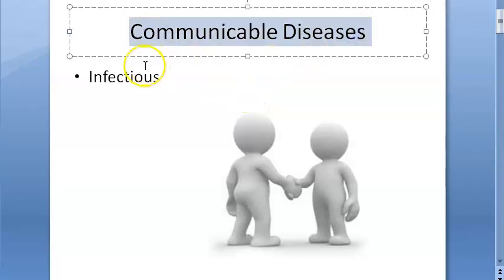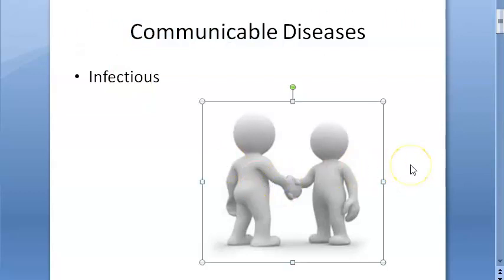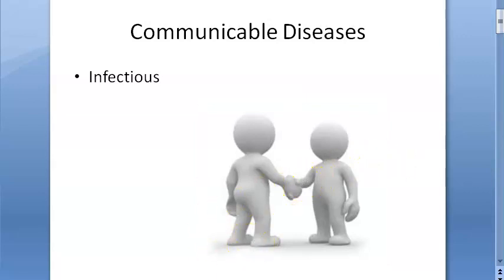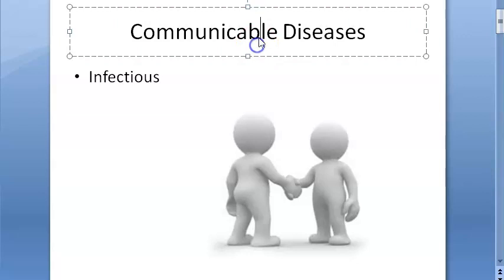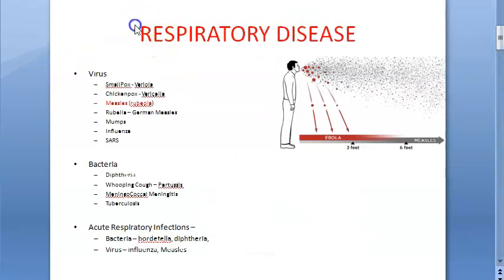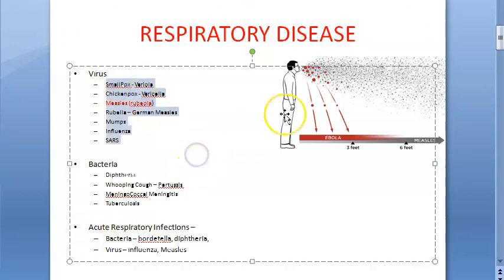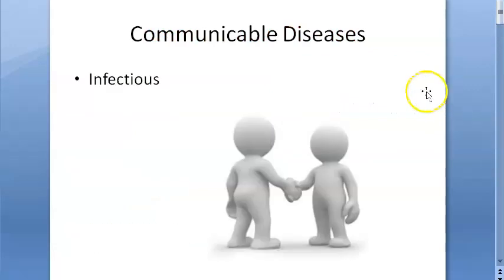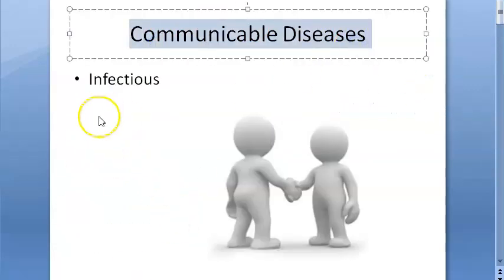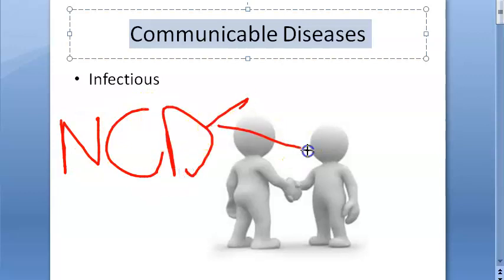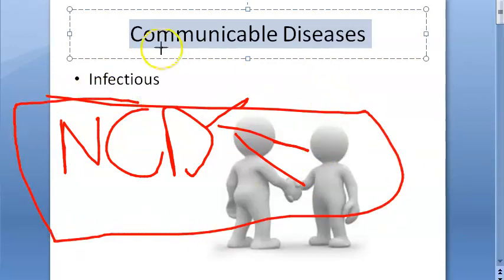In this video let us look at communicable diseases. Communicable means it's infectious — it can go from person to person, person to animal, animal to animal, animal to person. A lot of combinations are there. An example can be respiratory diseases like smallpox, chickenpox, measles, rubella, mumps. Non-communicable diseases like cancer, diabetes mellitus, and hypertension you cannot give to another person unless genetically transferred. Communicable disease is infectious; non-communicable is not.